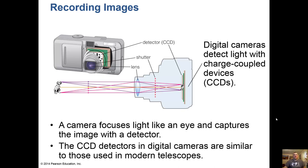These days we don't use film anymore; we use recording devices. In astronomy we have a special type of digital camera called a CCD — a charge-coupled device — basically a fancy name for a very sensitive digital camera. These cameras focus light just like a lens does and capture the image with the detector. CCD detectors in digital cameras are similar to those used in modern telescopes. If you have an older video camera at home, you might see 'CCD' printed on the side.